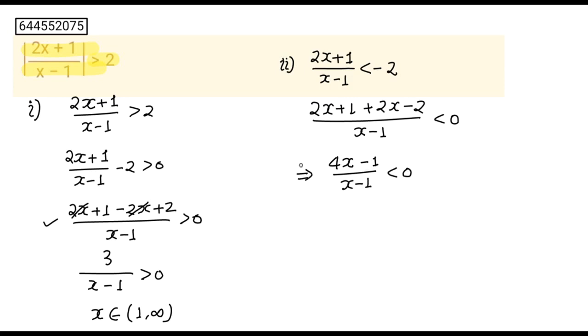I am going to draw number line minus infinity to infinity. So this is 1/4 and this is our point 1. We will take any number greater than 1, you will put at place of x, this will be positive. And if you will take any number between 1/4 to 1, you will put at place of x, this will be negative.